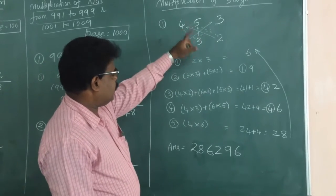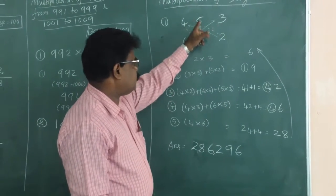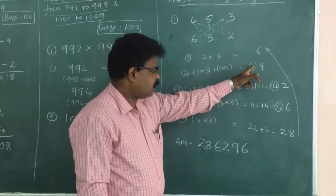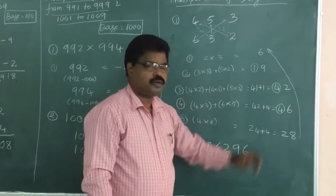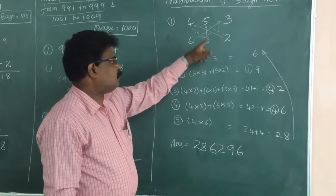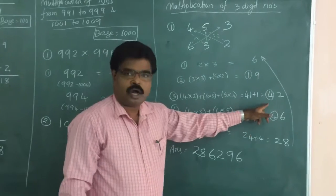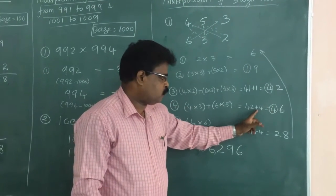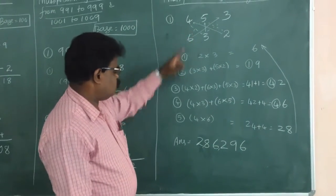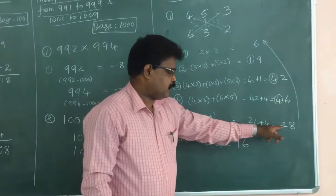Next, cross-multiply and add: 4 into 2 plus 6 into 3 plus 5 into 3 equals 41. Add the carry 1: 41 plus 1 equals 42, and 4 is the new carry. Next, cross-multiply: 4 into 3 plus 6 into 5 equals 42. Add the carry 4: 42 plus 4 equals 46, carry 4. Finally, multiply the leading digits: 4 into 6 equals 24. Add the carry 4: 24 plus 4 equals 28.